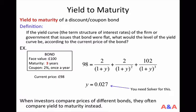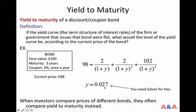That would make things easy. You can set up the following equation: today's price of £98 equals the £2 coupon discounted by the 1-year interest rate, plus another £2 coupon discounted by the 2-year interest rate squared, plus £102 discounted by the 3-year interest rate cubed. If all interest rates are the same, there is one equation with one unknown, and solving it — for example using Microsoft Excel Solver — gives you the interest rate: 0.027, or 2.7%.